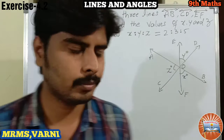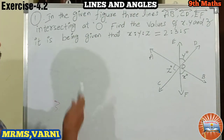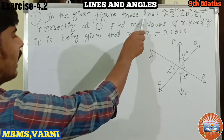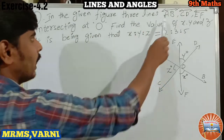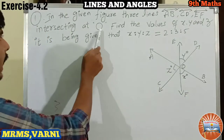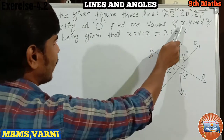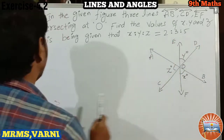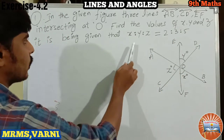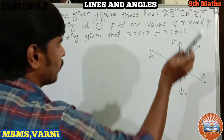Look at the question. In the given figure, three lines AB, CD, EF are intersecting at O. Find the values of X, Y, Z. It is given that X is to Y is to Z equals 2 is to 3 is to 5.